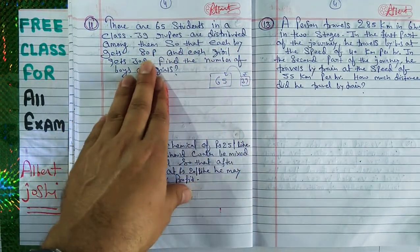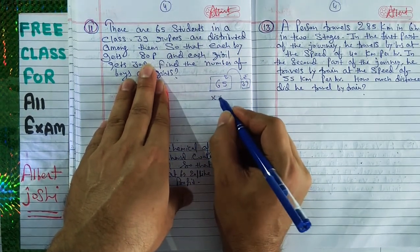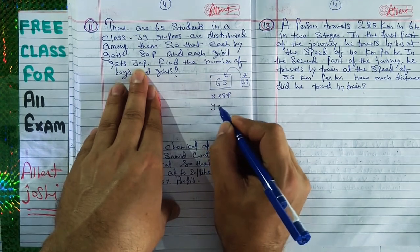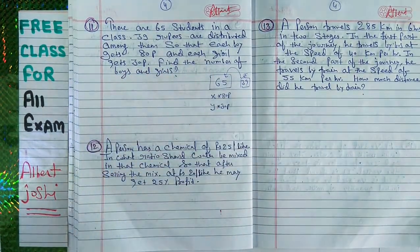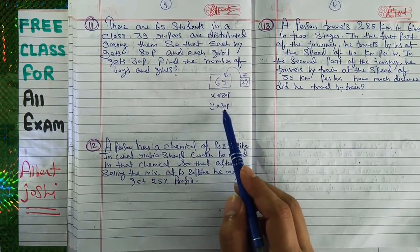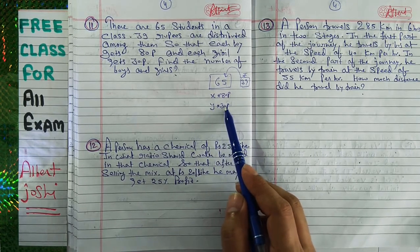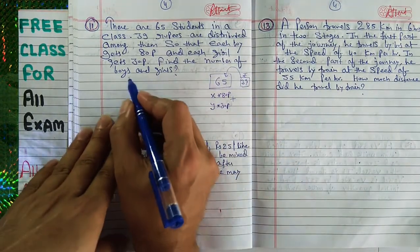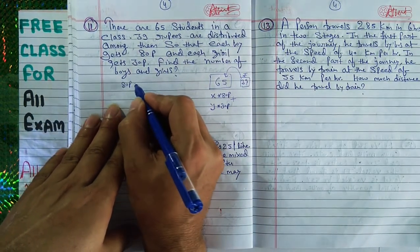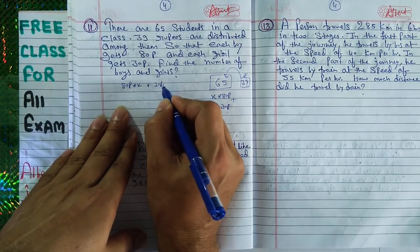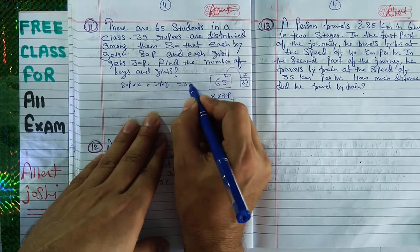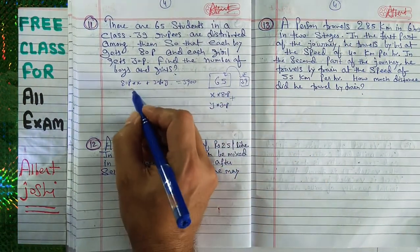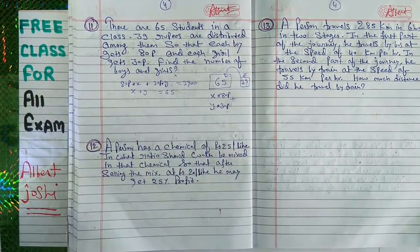Let there be x boys, each getting 80 paisa, and y girls, each getting 30 paisa. So 80x + 30y equals the total money, which is 3900 paisa. And the total number of boys and girls is equal to 65. You can also solve this by the high school algebraic method — this is the first method.